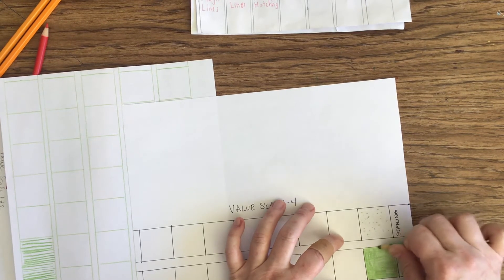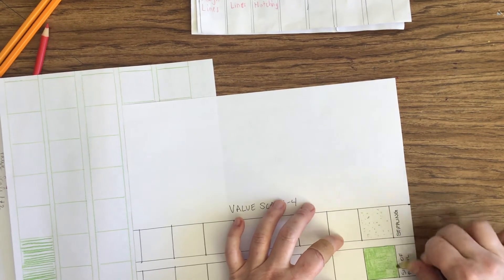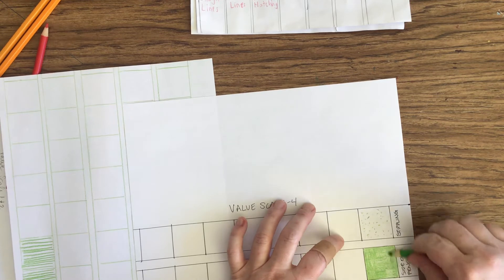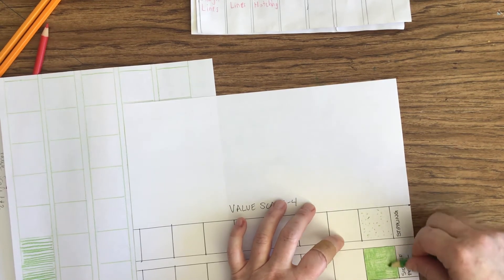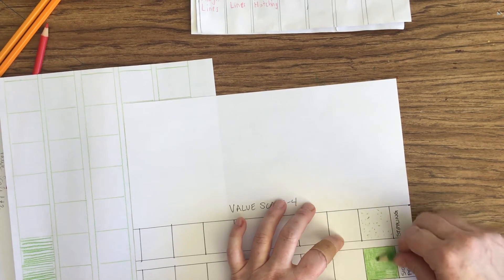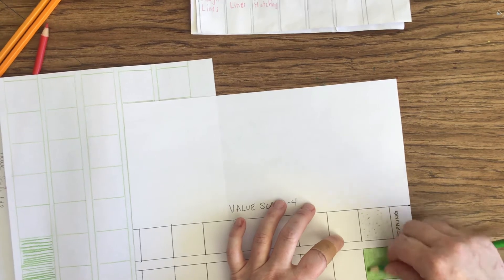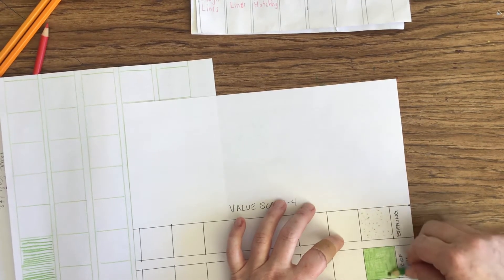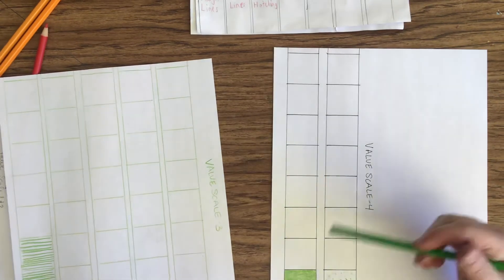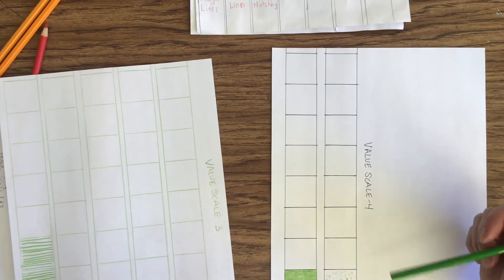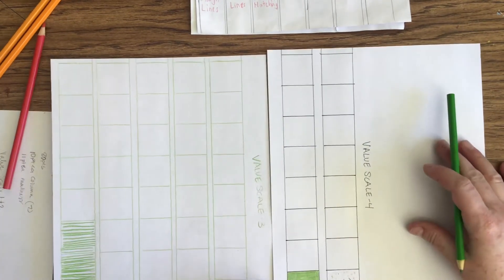Now, color pencil, you have to be really careful because color pencil is hard to erase. Sometimes it does erase, and sometimes it doesn't. Now, if you decide to use a yellow as your color pencil, it's not going to show up as bright, so just be aware of that when you're choosing your colors.